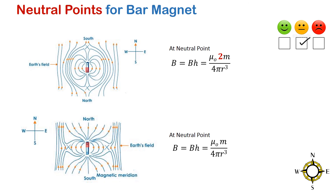In summary, the equal and opposing magnetic fields of the magnet and the earth cause the neutral points. I hope you found it useful — thanks for watching.